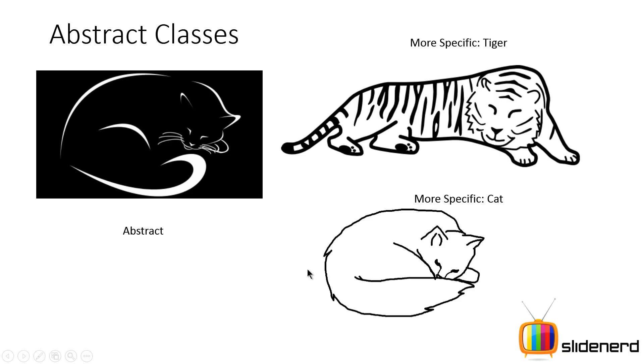Let's take a look at an example here. On the left side, if you guys see, there is an image which is not clear, whether it's a cat or a tiger. On the right hand side, if you see,